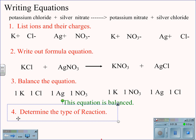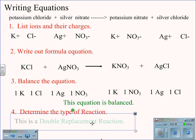Next, we determine the type of reaction we're dealing with. Potassium and silver both change partners, making potassium nitrate and silver chloride. Therefore, this is a double replacement reaction.